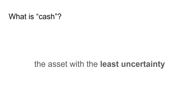So what is cash? In this framework, I would argue that cash is the asset with the least uncertainty, because any other asset that has more uncertainty than it would be inadequate for hedging. If you're trying to hedge uncertainty, you're going to want to do that with the asset with the least uncertainty. That doesn't mean that cash is a certain asset in the sense that the uncertainty is zero — that's impossible — but we're trying to find the asset with the least uncertainty so that we can hedge against future uncertainty.